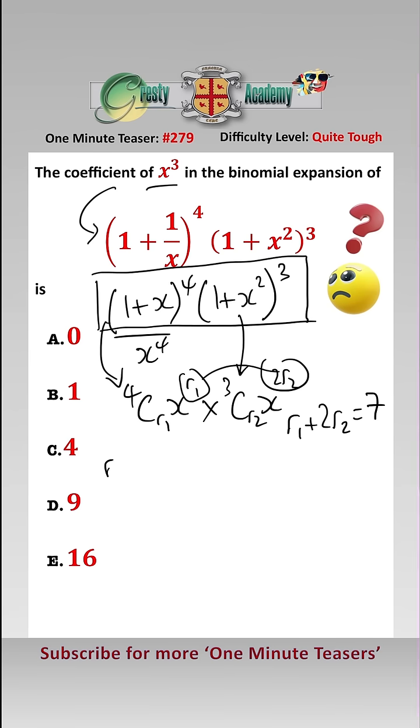This could possibly be r1 is 1 and r2 is 3, or r1 is 3 and r2 is equal to 2. r1 can't be even because 2r2 is even and we can't get x to the 7 out of that. All we need to do now is plug that in.